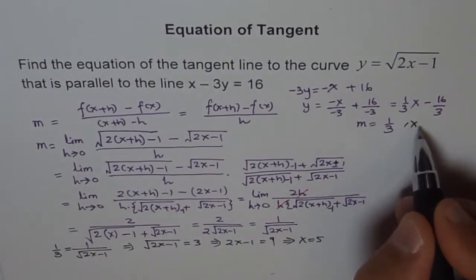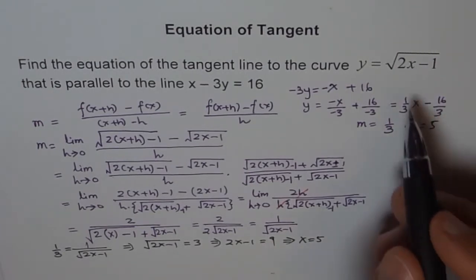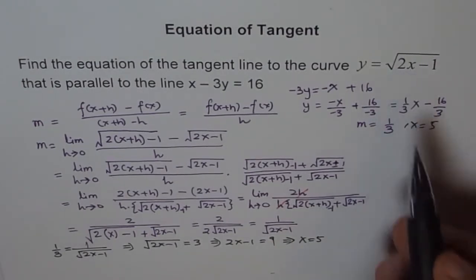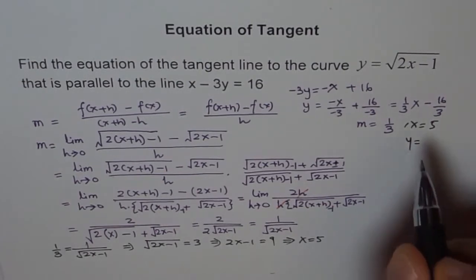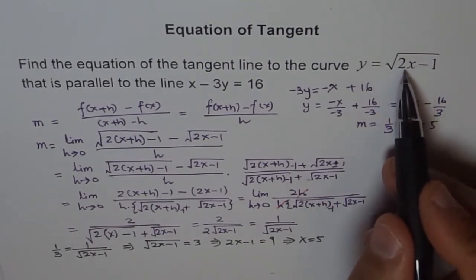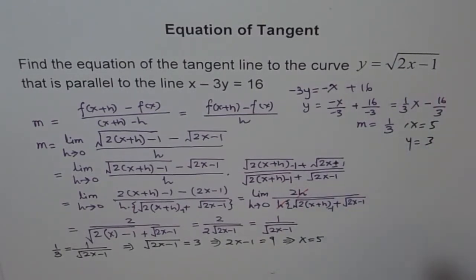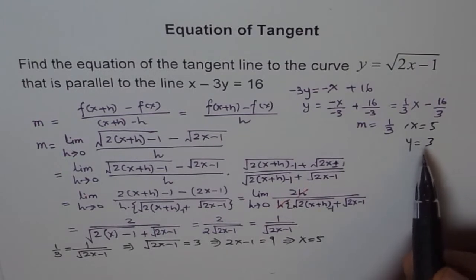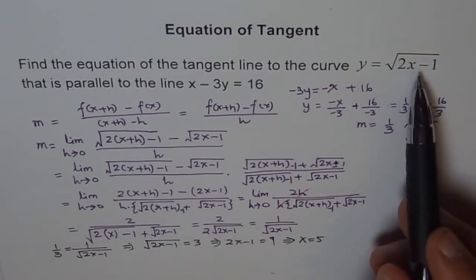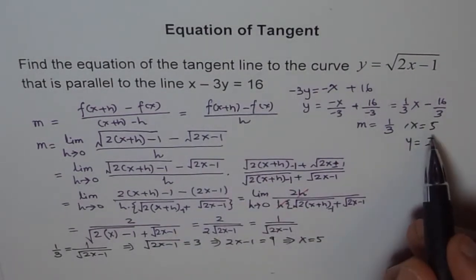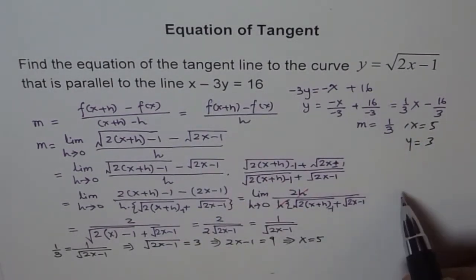Now that we know x equals 5, we can find y by plugging into the original curve: y equals square root of 2 times 5 minus 1, which is square root of 9, equals 3. So the point on this curve where the tangent is parallel to the given line is (5, 3), and the slope is 1 over 3.